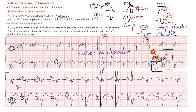Sinus rhythm should be present when calling any of these atrial abnormalities, as that's how the criteria were initially formulated. Biatrial enlargement is not a common finding, but if you know the right and left atrial enlargement criteria you can make this diagnosis.